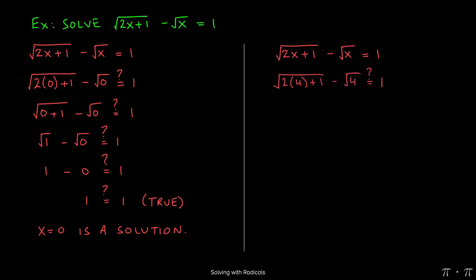Similarly, we can try the same thing with 4 on the right-hand side. So 2 times the 4 plus 1 inside the square root minus the square root of 4. We're trying to determine if that equals 1. 2 times 4 is simply 8. 8 plus 1 gives us 9. So we have the square root of 9 minus the square root of 4, and we're trying to determine if that equals 1.